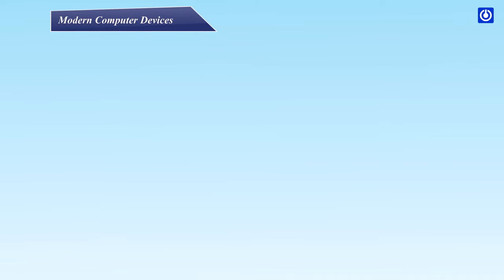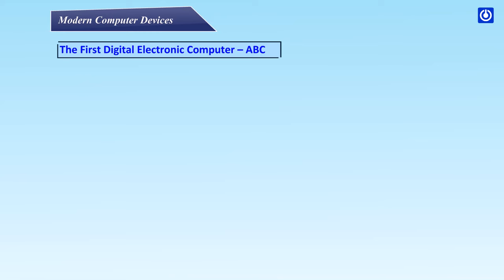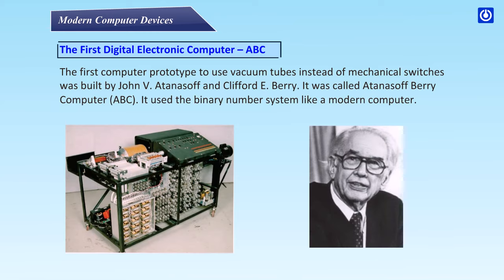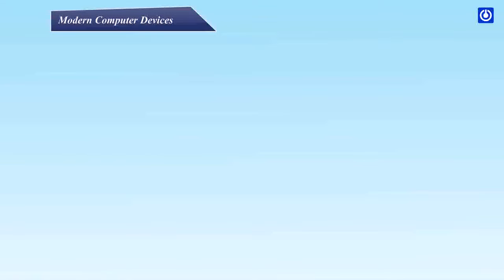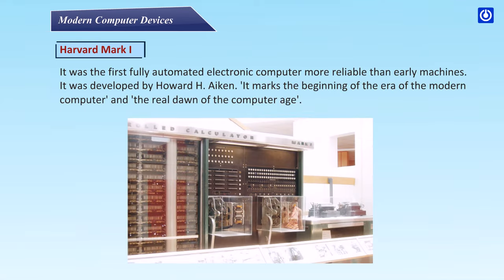Modern Computer Devices — The first digital electronic computer, ABC: The first computer prototype to use vacuum tubes instead of mechanical switches was built by John V. Atanasoff and Clifford E. Berry. It was called the Atanasoff-Berry Computer, or ABC. It used the binary number system like a modern computer. It was the first fully automated electronic computer, more reliable than early machines. It was developed by Howard H. Aiken and marks the beginning of the era of the modern computer and the real dawn of the computer age.